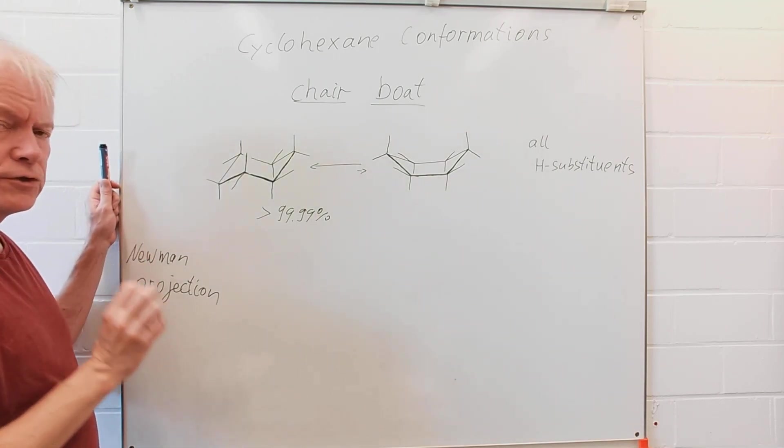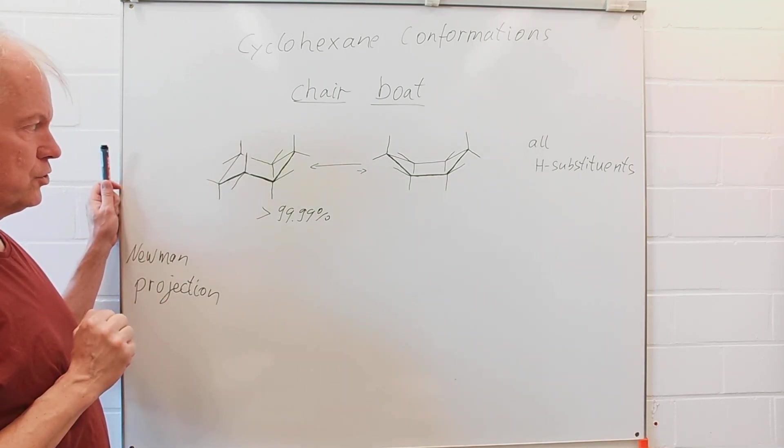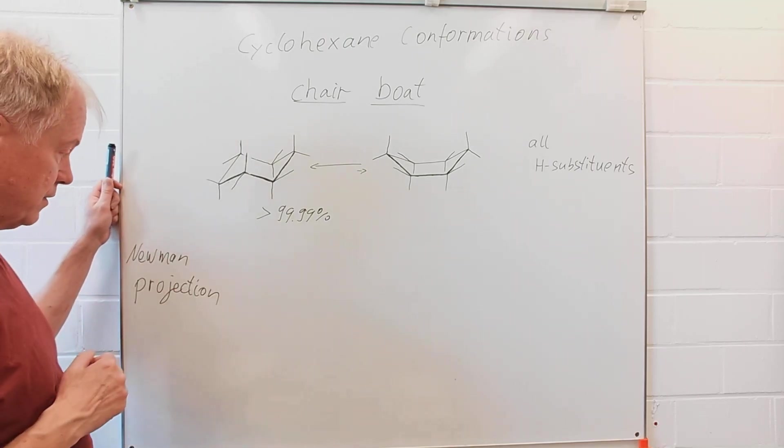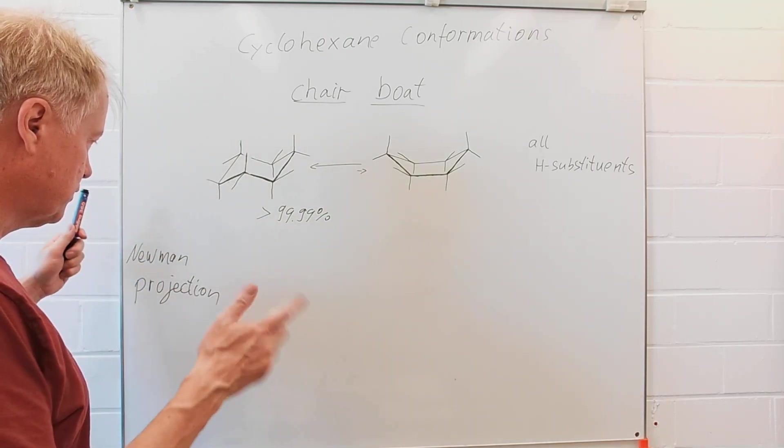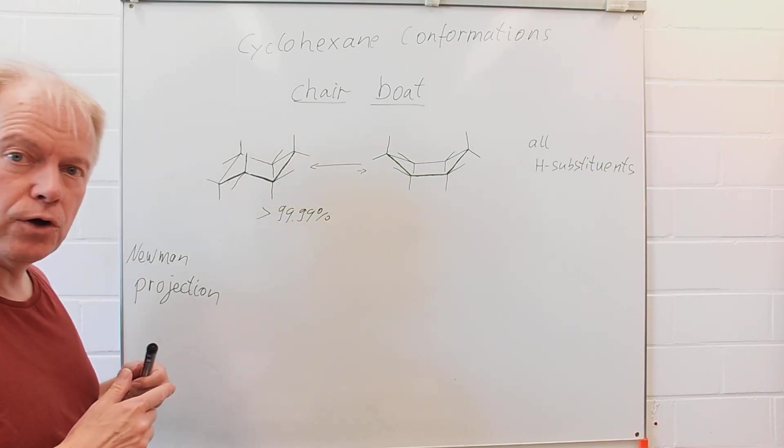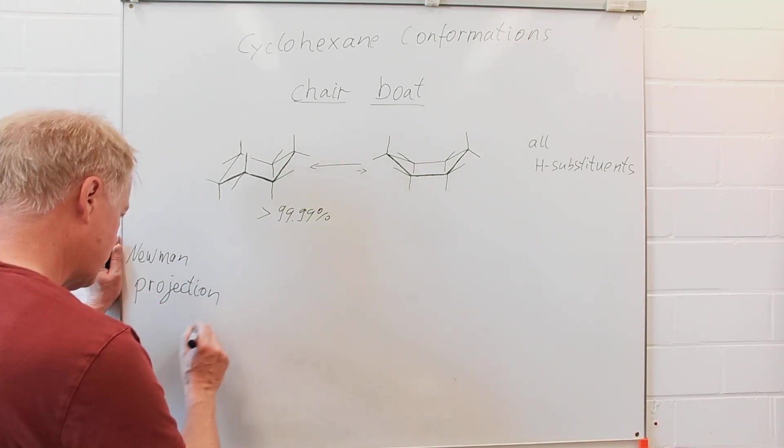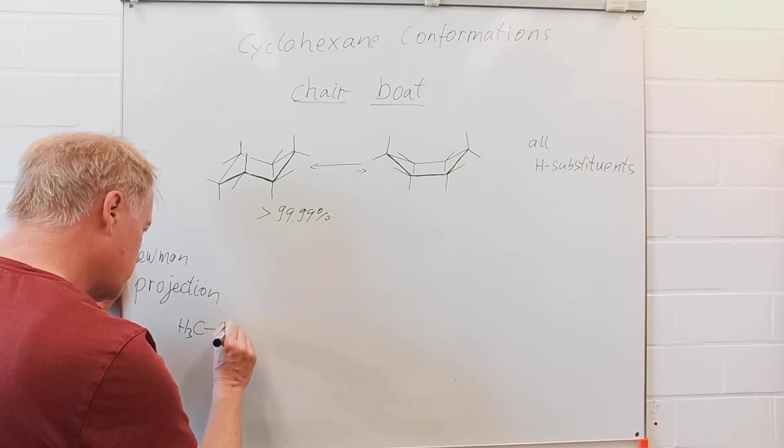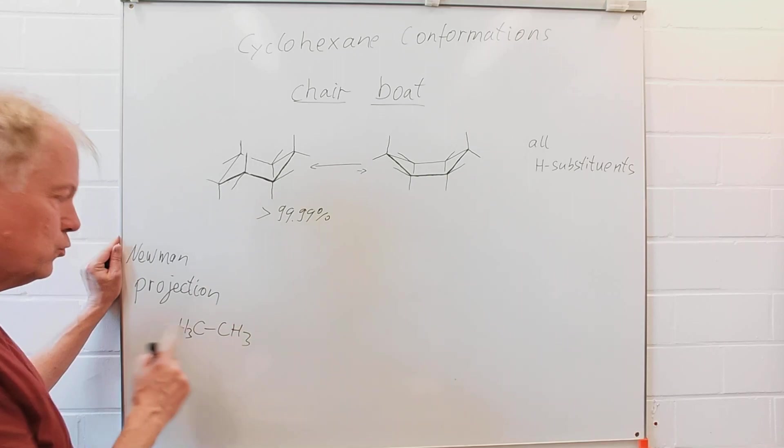With the Newman, the so-called Newman projection, we can easily understand why this is the case. So, a simple Newman projection of ethane. That means, let's have a look at the molecule consisting of two combined methyl groups.